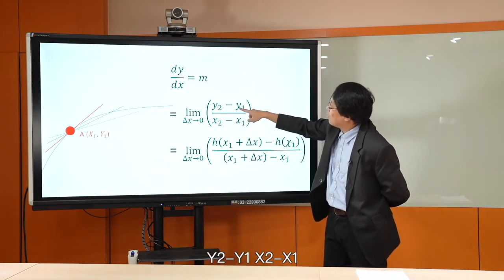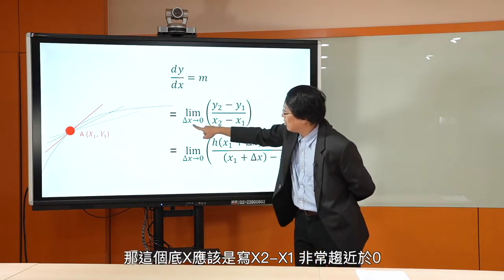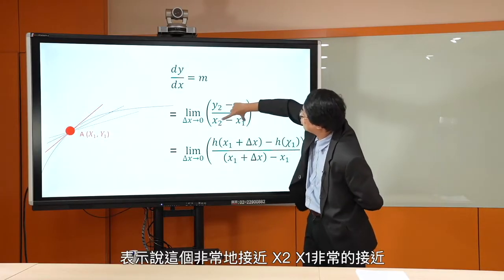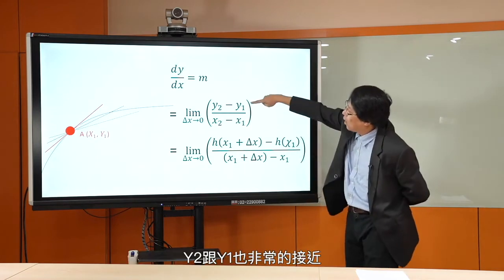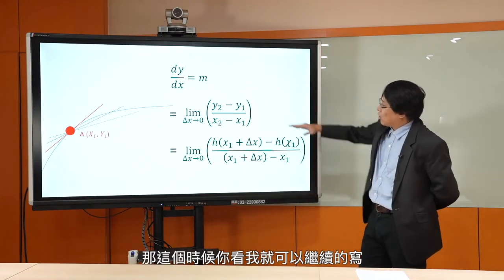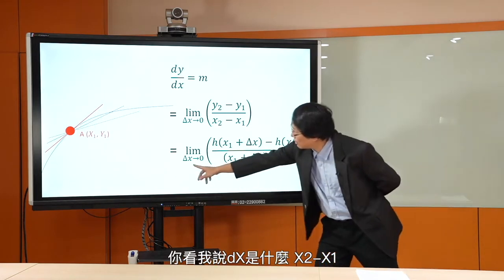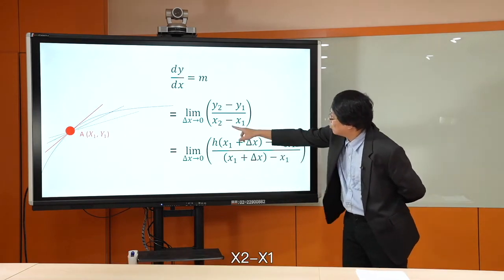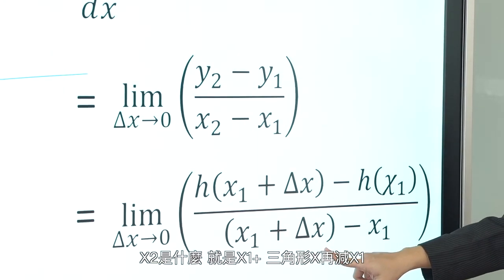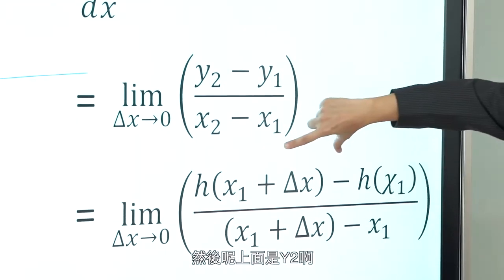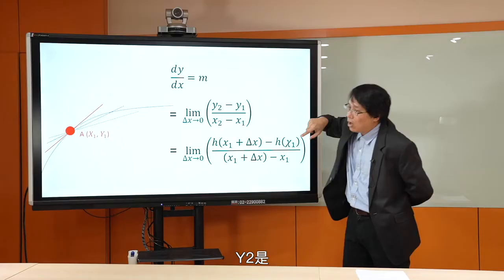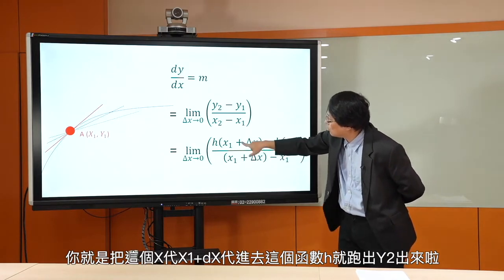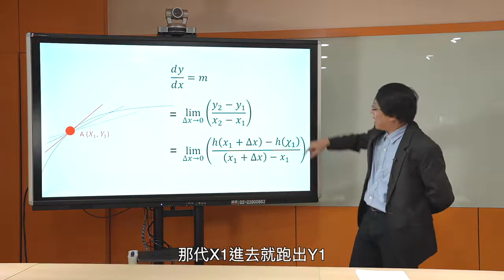我们就这样写，y2-y1除以x2-x1。这个dx其实应该是写x2-x1非常趋近于0，但这样写会很复杂，所以我们就写Δx非常趋近于0，表示非常接近。我们用小dy跟小dx，dydx，表示y2-y1离非常近，x2-x1离非常近，用这个方式定义出m。x2就是x1加dx，带x1加dx进去这个函数h就跑出y2，带x1进去就跑出y1。